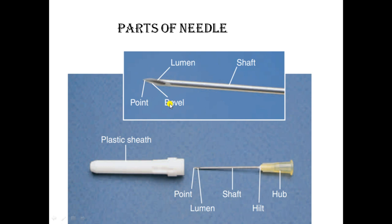The bevel helps ease insertion of the needle into tissue. There are finer cuts of different bevel lengths — for example, a fine-tip bevel is used for insulin syringe needles. The finer the bevel cut, the less pain and trauma to the patient's tissue. The shaft is the hollow steel part of the needle through which medication passes into the patient. The hub is the component that attaches the needle to the syringe and is color-coded for easy recognition of size.